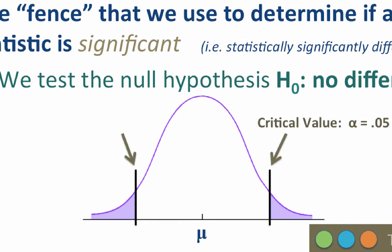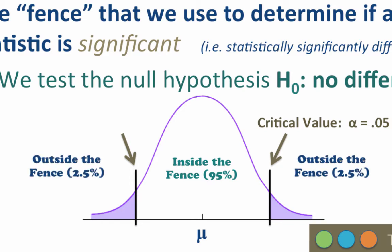The fence is called our critical value. The specific location will vary depending upon our sample, but we will use the same standard to set the critical value every time. That standard is an alpha level of .05. We set the fences so that 95% of the scores under the curve are inside the fence, and 5% of the scores under the curve are outside the fence. Here, because we have two tails, we will put 2.5% in either tail for a total of 5%.